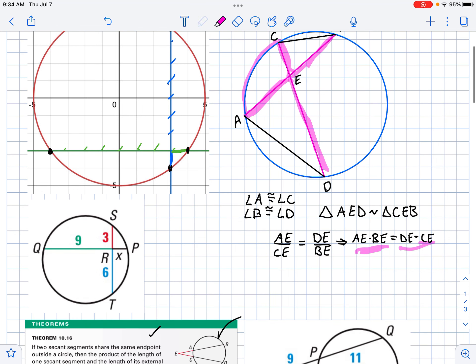So if you look down here at this problem, what we've got is 6 times 3 equals 9 times X. You've got 18 equals 9X, and that means that X equals 2. That's it.